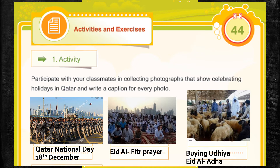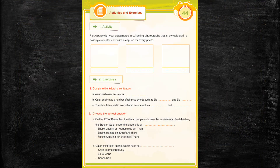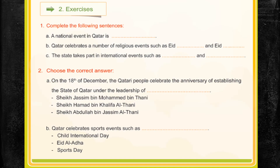Let's go to the next half of this page. The last half of this page has exercise 2 on it. Let's read the instruction for question 1: Complete the following sentences. These are blanks that we need to fill in. A: A national event in Qatar is Qatar National Day. B: Qatar celebrates a number of religious events such as Eid — there's a blank — Eid and then another blank that we need to fill.